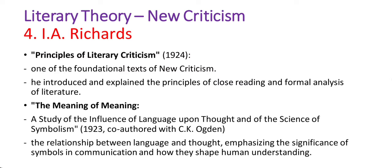I.A. Richards's important works include Principles of Literary Criticism, considered one of the foundational texts of New Criticism. In this book, he introduced the principles of close reading and formal analysis of literature, discussed the role of ambiguity, symbolism, and the multiple interpretations of texts. His next major work, The Meaning of Meaning: A Study of the Influence of Language upon Thought and of the Science of Symbolism, explores the relationship between language and thought, emphasizing the significance of symbols in communication and how they shape human understanding. The book had a substantial impact on linguistic and semiotic theory.